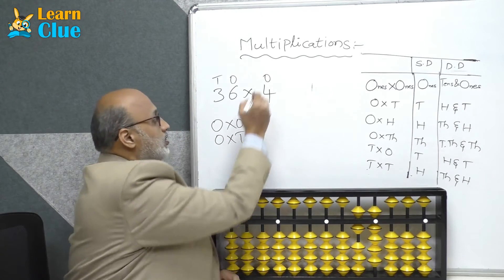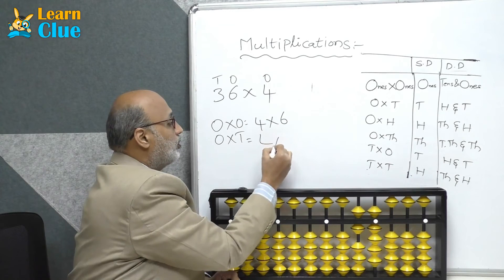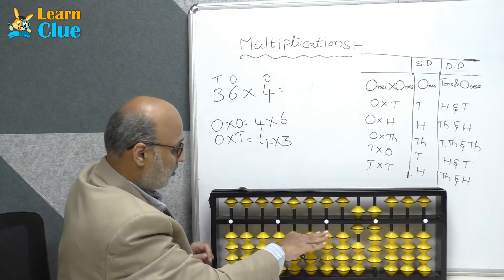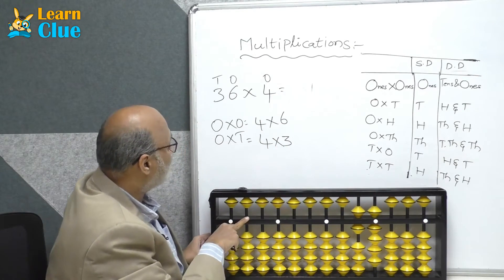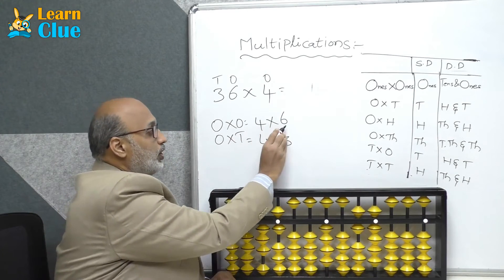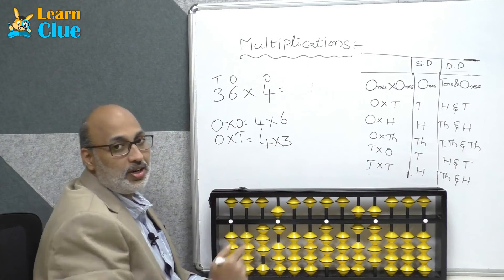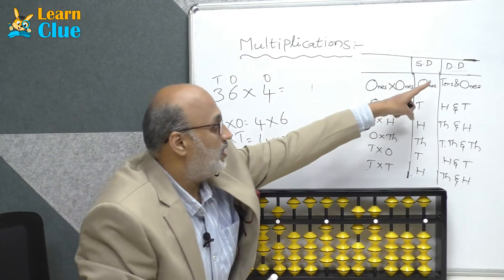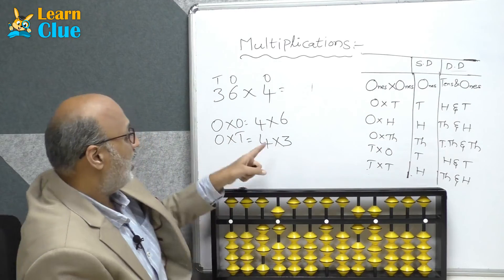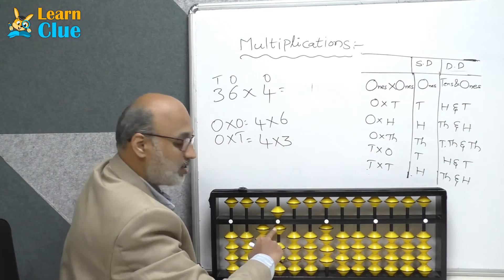Now tell me how to do bifurcation of ones into ones and ones into tens. For 36 into 4: 4 into 6 is ones into ones, and 4 into 3 is ones into tens. First put the multiplier 4 here. So 4 into 6 is 24. If the answer is in double digit for ones into ones, you first have to place the tens digit and then the ones digit. 4 sixes are 24.